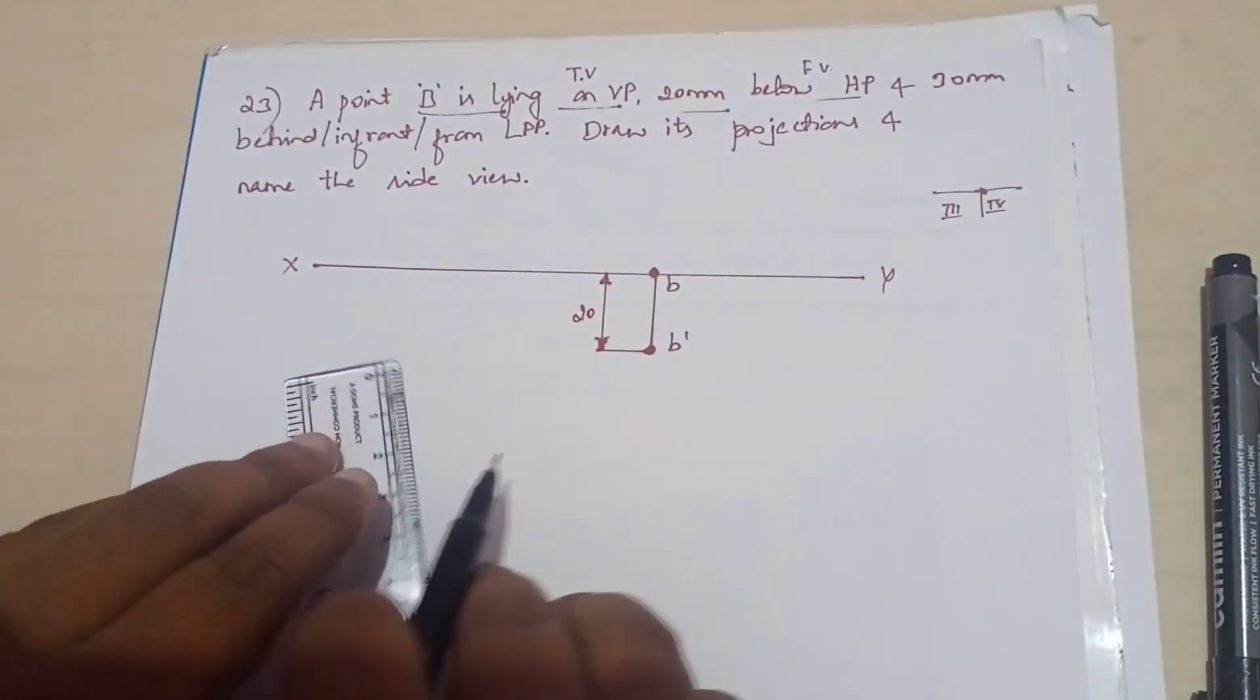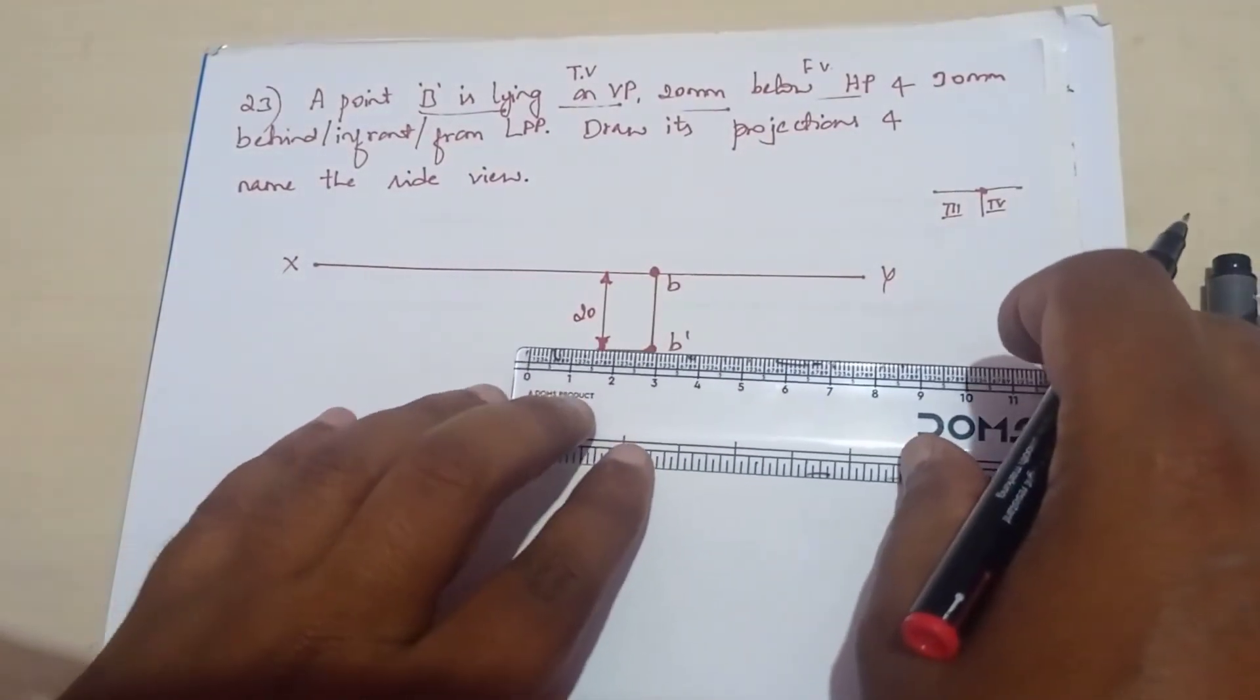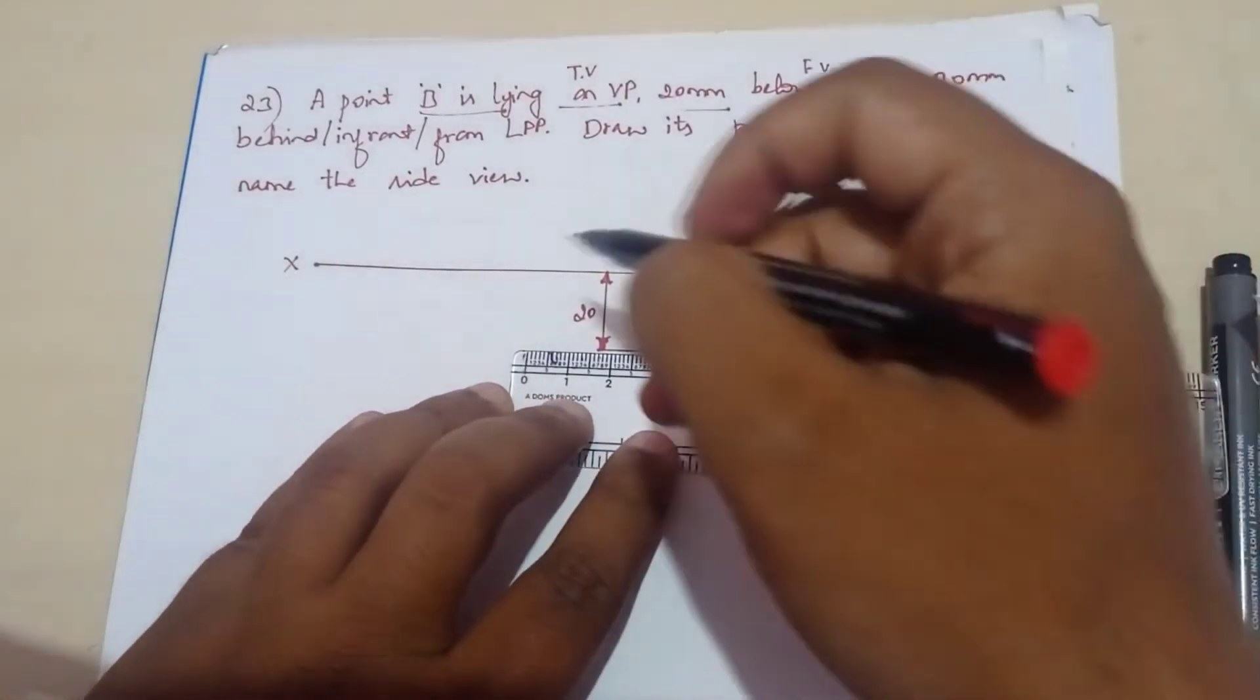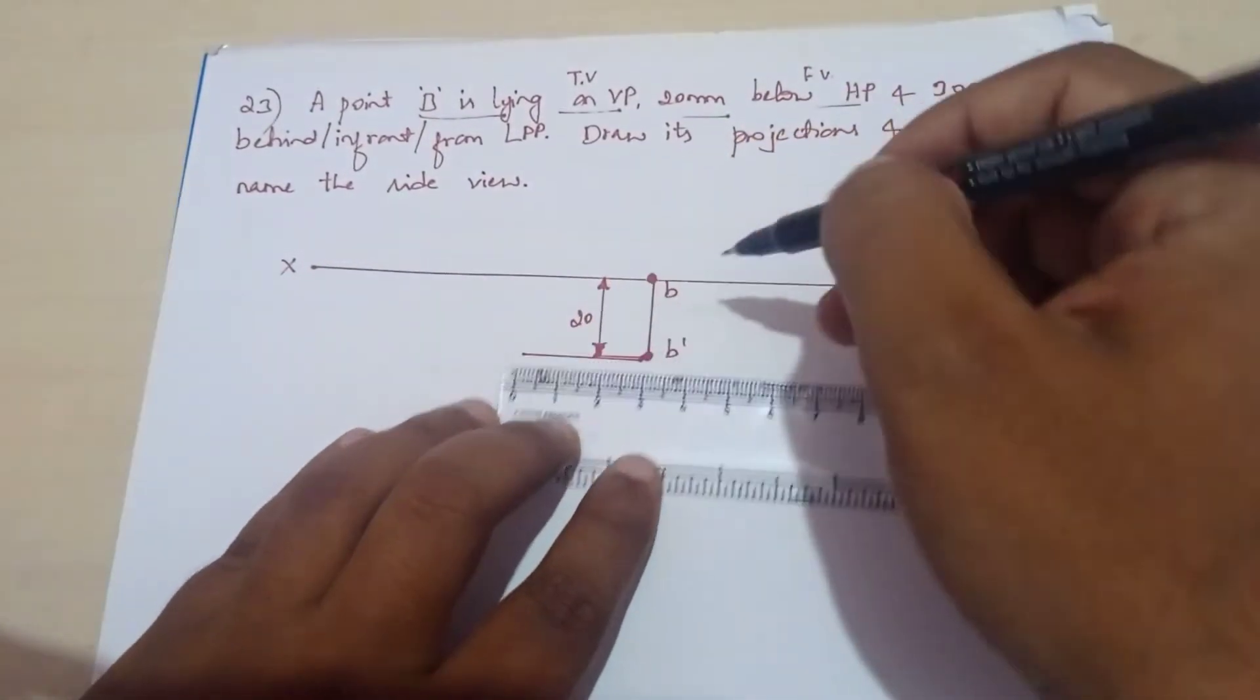And here from LPP, the distance is 30 from the left profile plane. So dimension line I am mentioning here - it is 30.